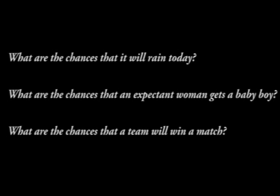If the team has won 6 matches in the last 8 encounters, the chances of winning are 6 over 8, which is 3 over 4. The team is more likely to win the match. Some events have equal chances of occurring; they are said to be equally likely events. For example, when a coin is tossed, the probability of getting a head and a tail is a half. The probability of an event that can be determined from past experience is called experimental probability. In the experiment of tossing a coin, each toss is called a trial and each result is called an outcome.